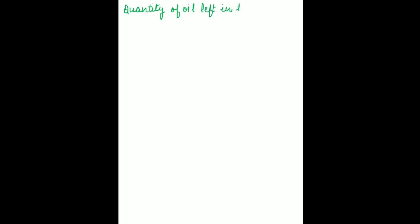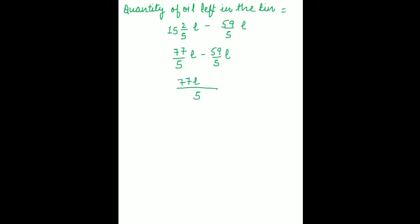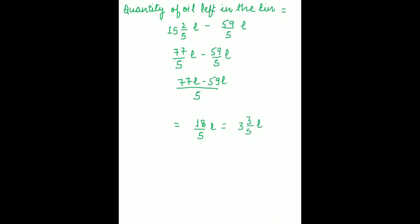Now we have to find how much quantity of oil is left in the tin. Quantity of oil left equals 15 whole 2 upon 5 liters minus 59 upon 5 liters. Convert 15 whole 2 upon 5 to improper fraction: 77 upon 5 liters minus 59 upon 5 liters. Both are like fractions, so 5 is the common denominator. 77 minus 59 equals 18 upon 5 liters, that is 3 whole 3 upon 5 liters.